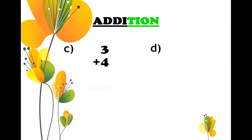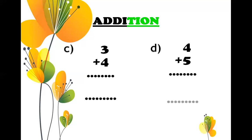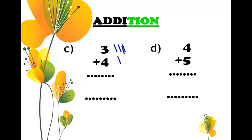Now 3 plus 4. Draw three lines in front of number 3: one, two, three. Now draw four lines: one, two, three, four. Count how many lines are there: one, two, three, four, five, six, seven. Seven is the correct answer, please write seven.